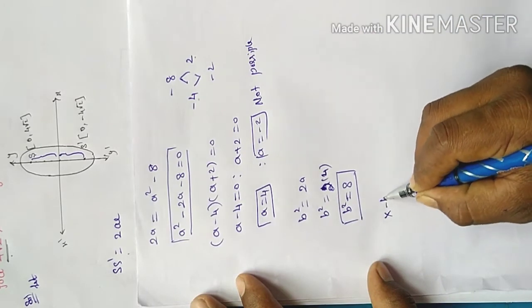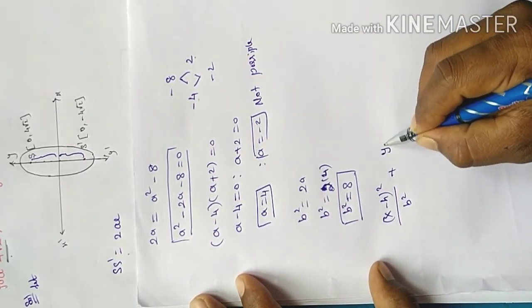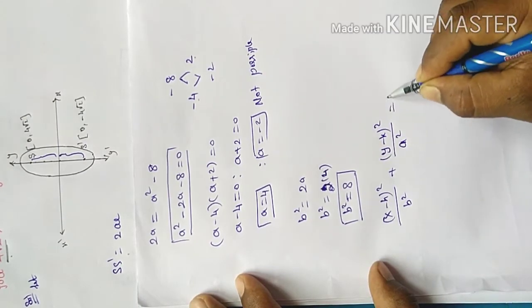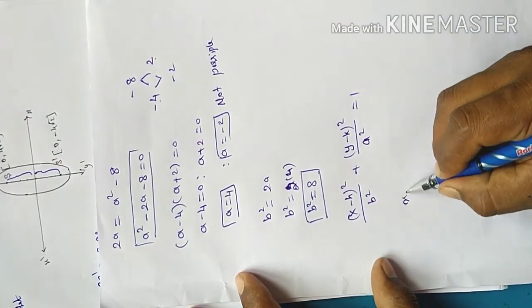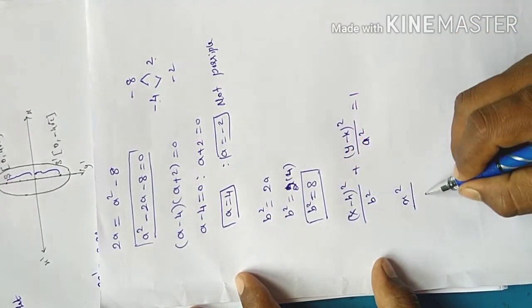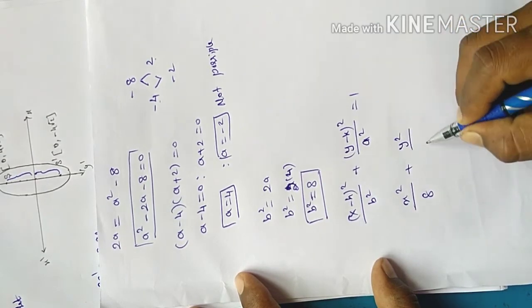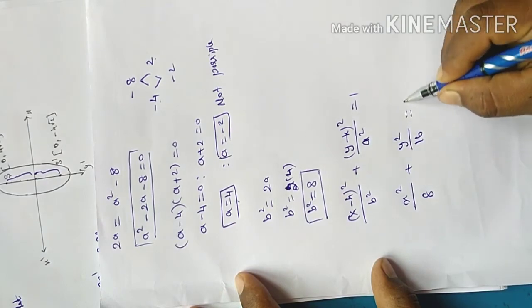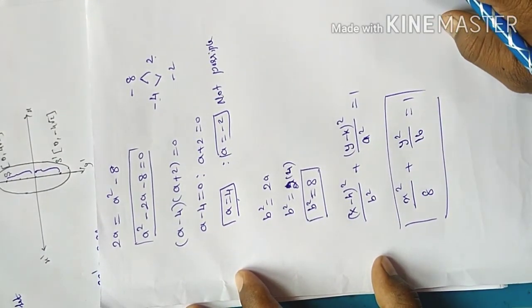The equation is: x minus h whole square by b square plus y minus k whole square by a square equal to 1. Substituting values: x square by 8 plus y square by 16 equal to 1. That is the ellipse equation. Thanks group.